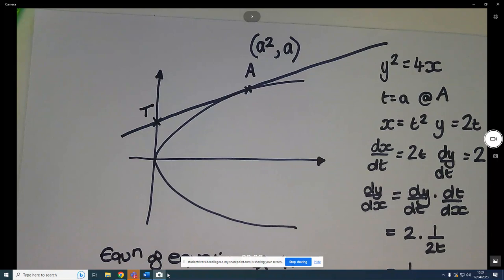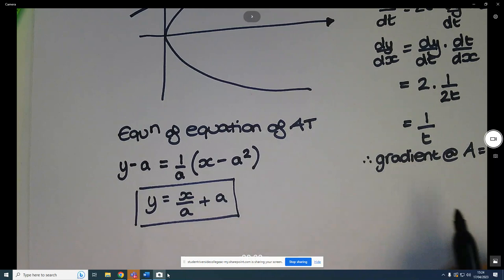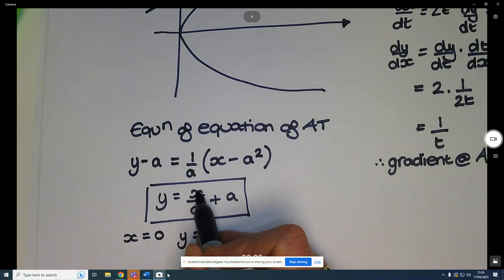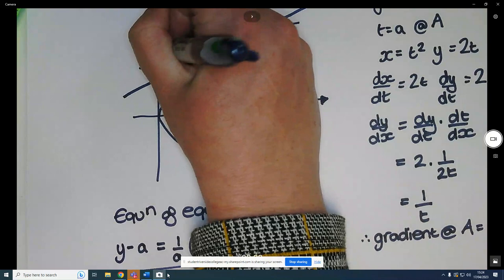Right, if we then find this point t here, t is where our x is 0. And it lies on this line here. So when x is 0, y is equal to a... sorry, this should be 2a here, shouldn't it? Sorry, got that wrong there. That should be 2a there. So when x is 0, y equals 2a, because 0 divided by a is nothing, add a... So this point here is 0, 2a.